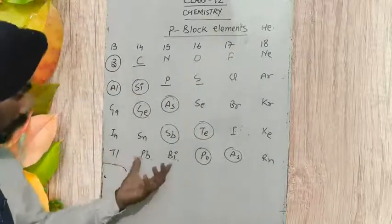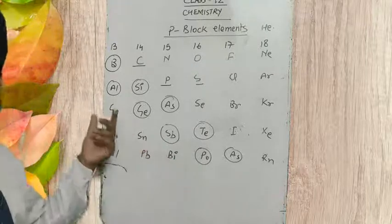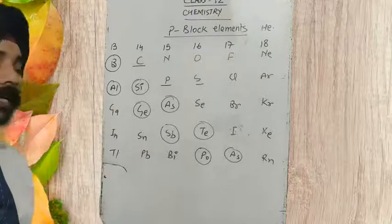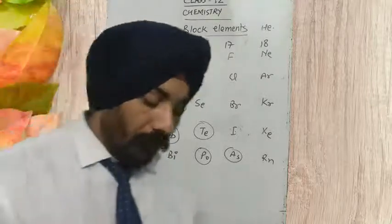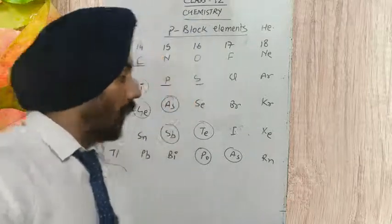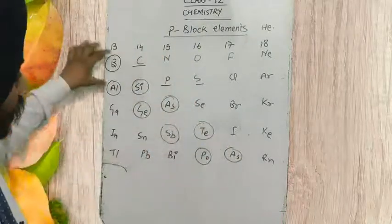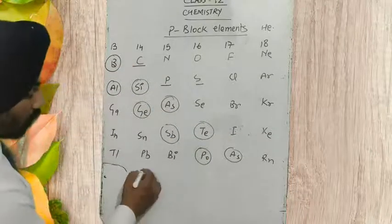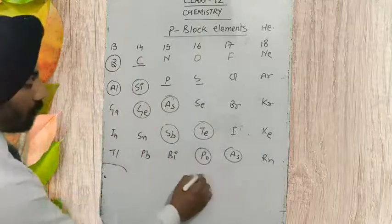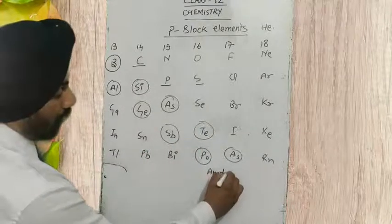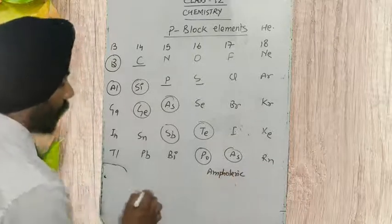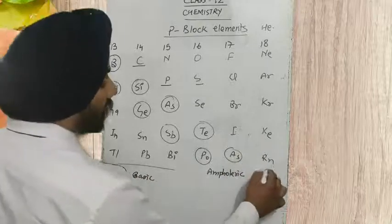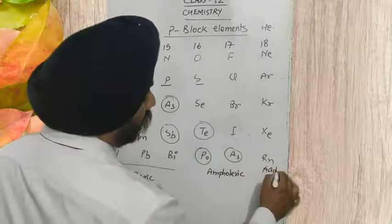But if we are talking about the oxides of these metallic elements, if they are making their oxides, they are quite basic in nature. And what kind of nature do the oxides of metalloids have? They are amphoteric in nature. So metallic oxides are basic, metalloid oxides are amphoteric, and non-metal oxides are acidic or neutral.